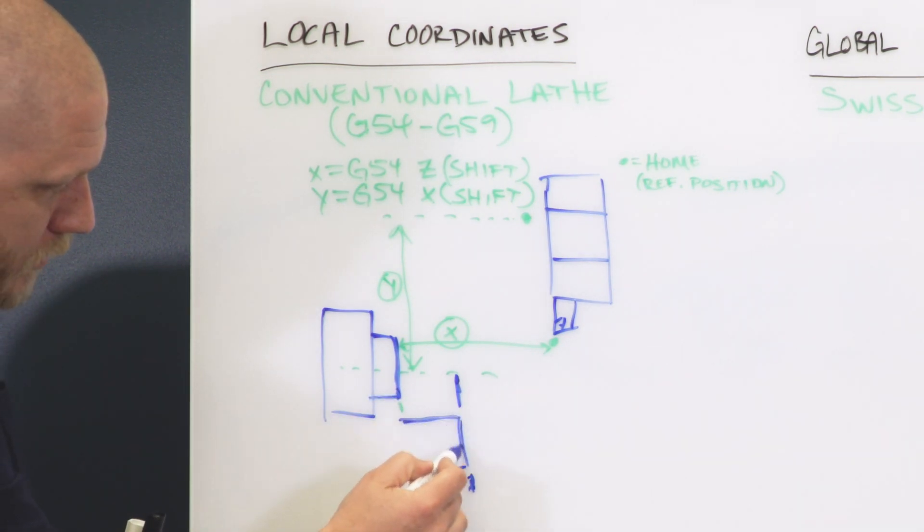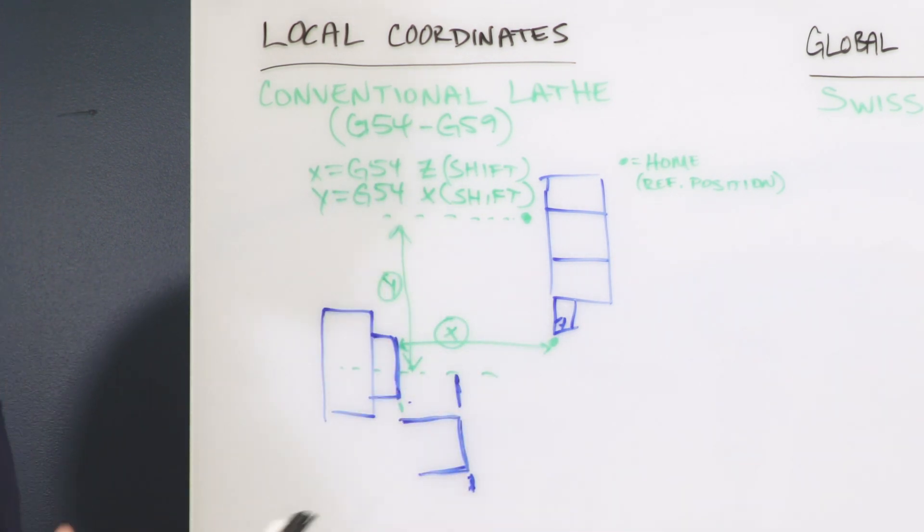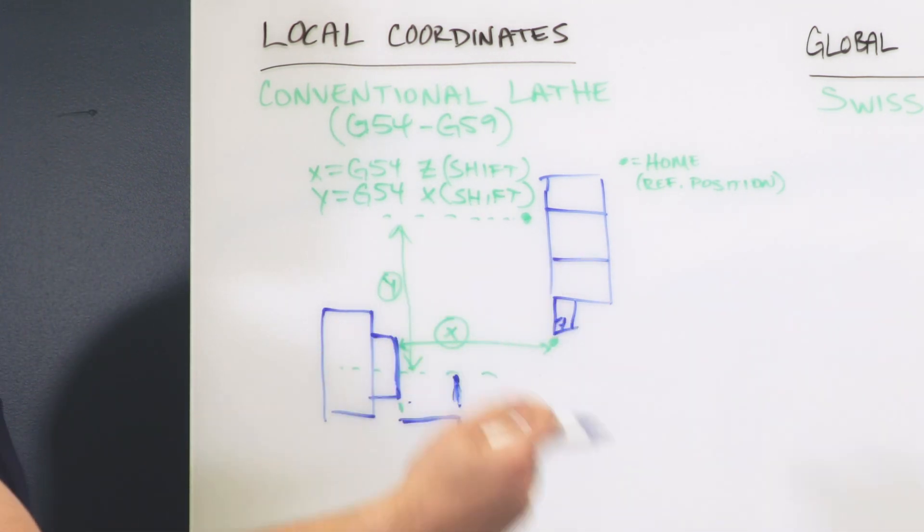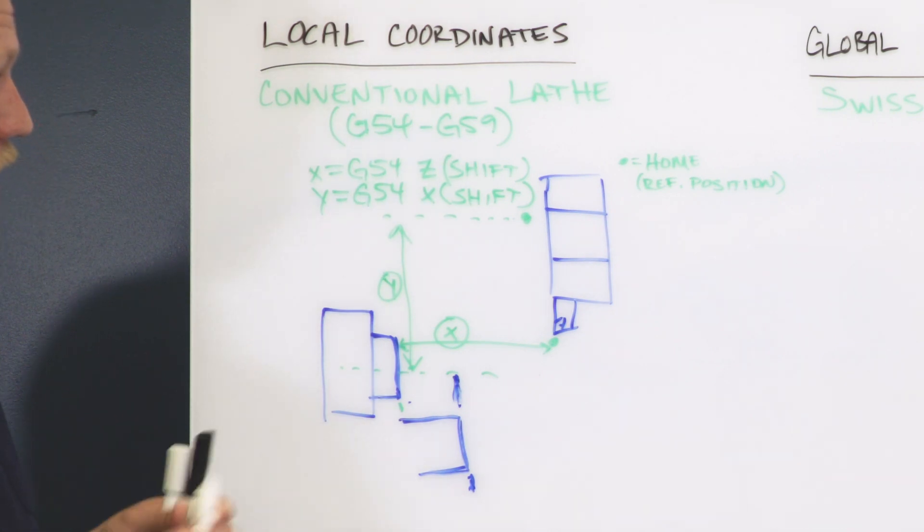So if this is your starting point in G54 and this is your Z0, now you pull the material out to here. So now you have a new coordinate system, G55, maybe it's G56, with this new Z0 plane. So you can shift this as you go with different coordinate systems or with different local coordinates.